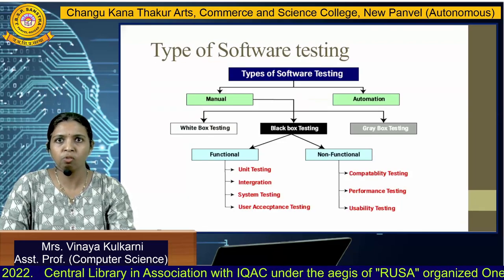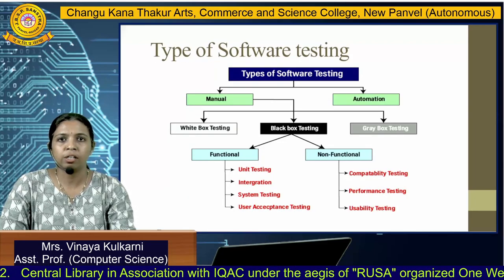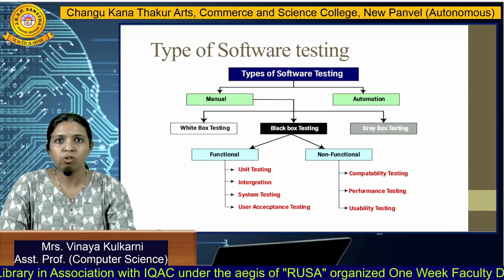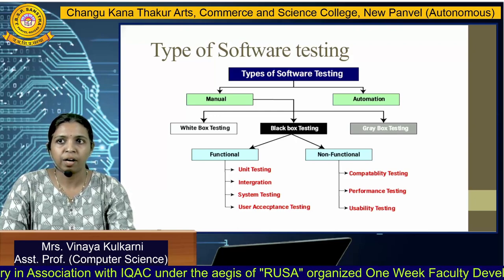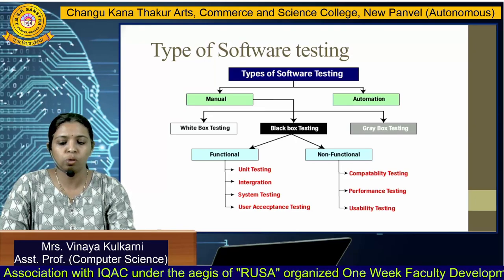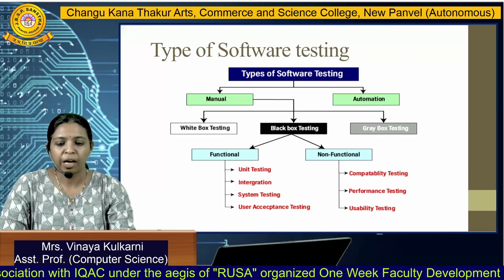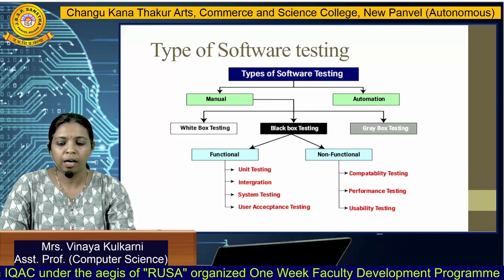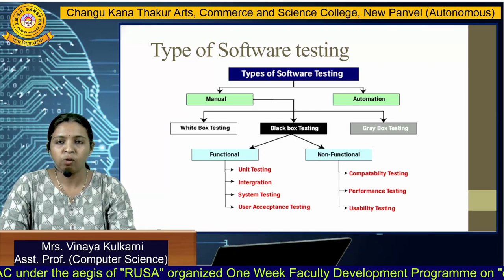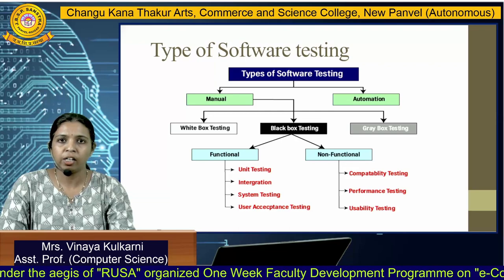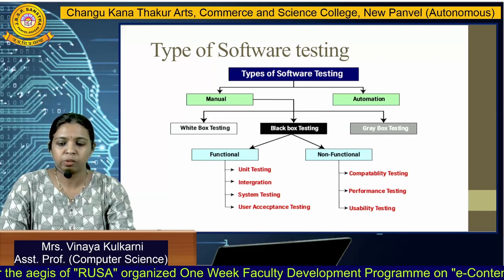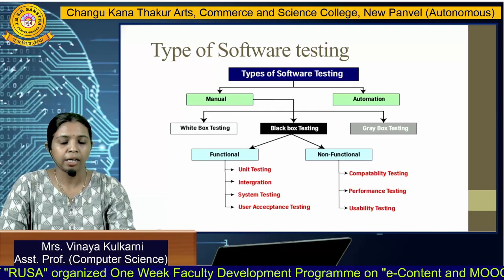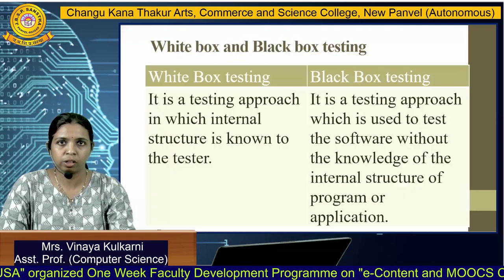Now we see the different types of software testing. Basically, software testing is divided into two types: manual testing and automation testing. Manual testing is further divided into three types: white box testing, black box testing, and gray box testing.